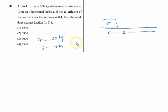If the coefficient of friction between the surfaces is 0.4, which can be written as 4 by 10 or you can say 2 by 5.